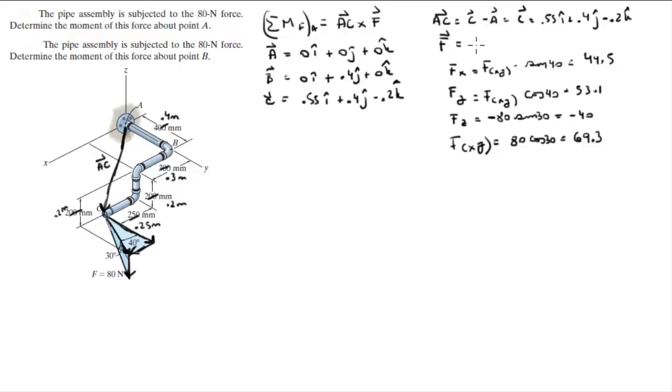So, the Cartesian vector form of F is 44.5 in the i plus 53.1 in the j minus 40 in the k.